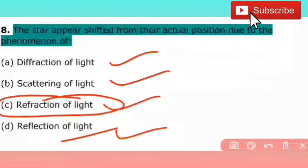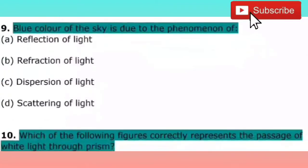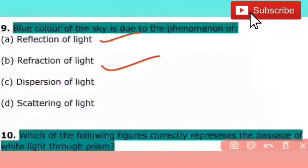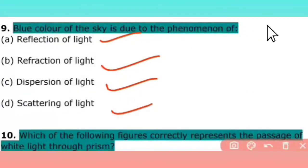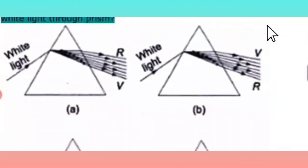The next question: the blue color of the sky is due to the phenomenon of — reflection of light, dispersion of light, or scattering of light. The right answer is scattering of light, because when white light enters the atmosphere, the blue color is scattered all around, which is why the sky appears blue to us.